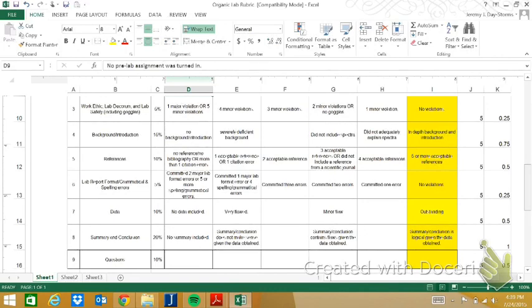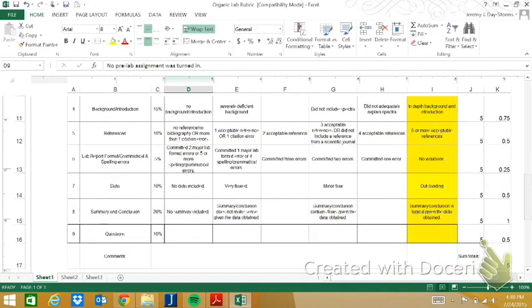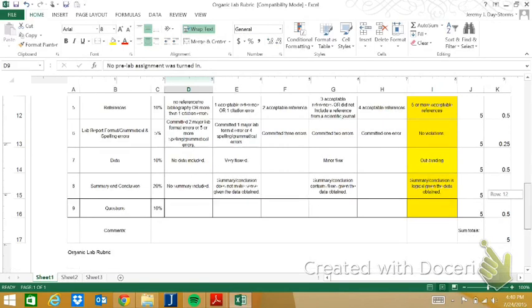There's a background introduction section. You have to have references, there's a minimum of five or more acceptable references, one of which must come from a scientific peer-reviewed journal article. We take off for lab report formatting errors, grammatical errors, spelling errors. You have 10% of your data, 20% is your summary or conclusion section. Some people call this the discussion section. Finally, there's 10% for questions. If the lab report doesn't have any questions assigned to it, then usually the extra goes towards your discussion, your summary or conclusions, because that's the most important section of the entire report.